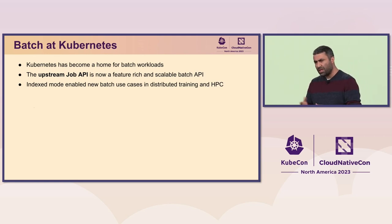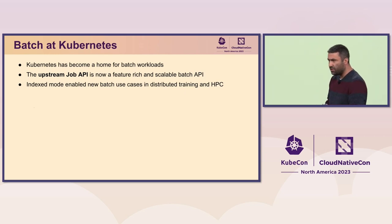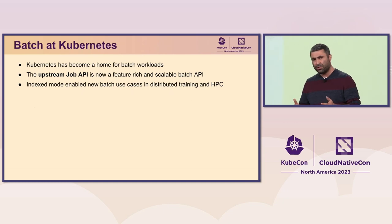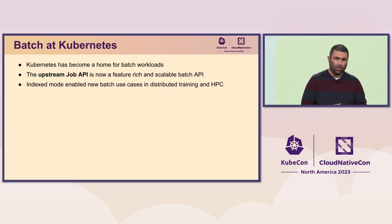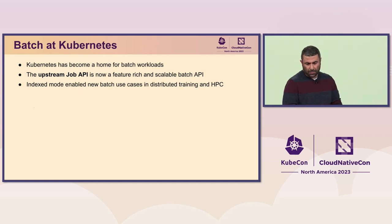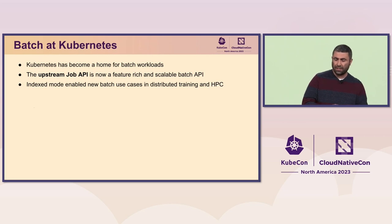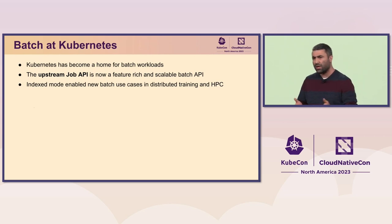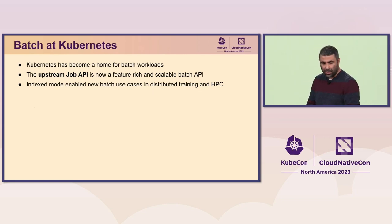The main feature we added in the Job API was indexed job. In addition to that, we have new features related to pod failure policies, and also the ability to set up stable network IDs for pods created through indexed job — which are all requirements if you've ever worked with MPI or distributed training.